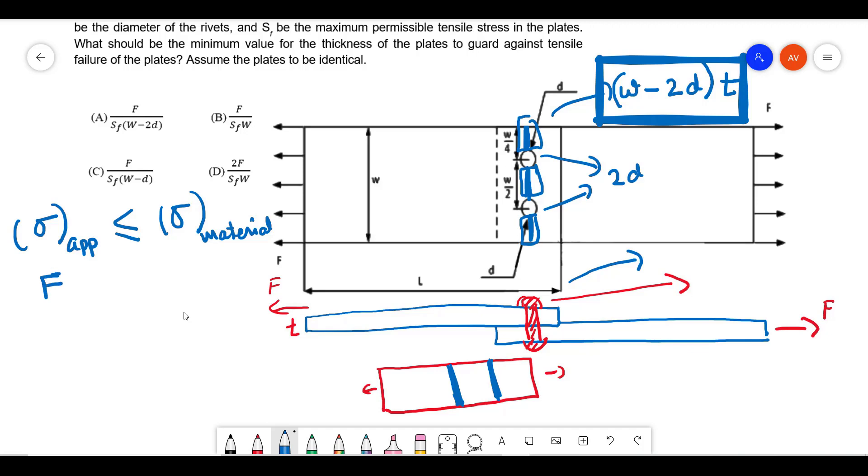Applied stress is going to be force by cross-sectional area. What is the cross-sectional area? W minus 2d into t should be less than or equal to the permissible stress SF.